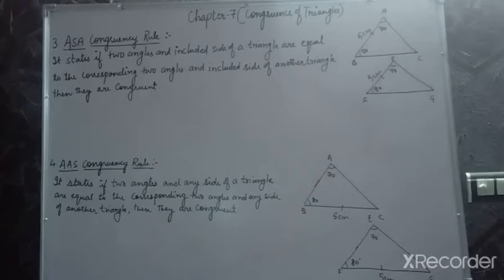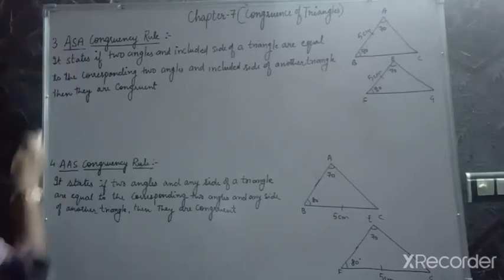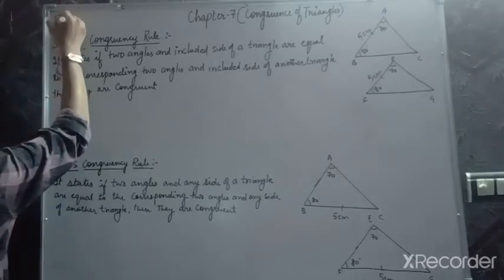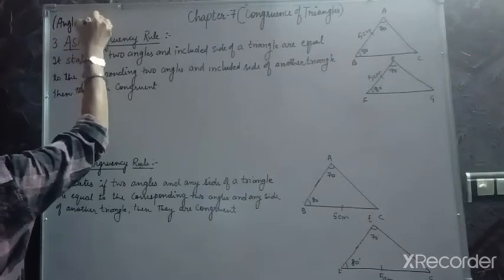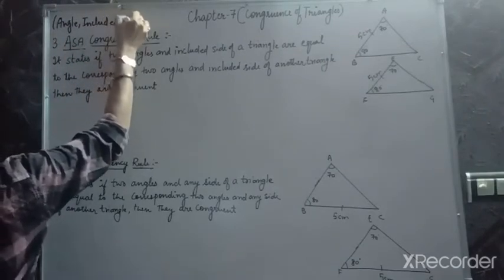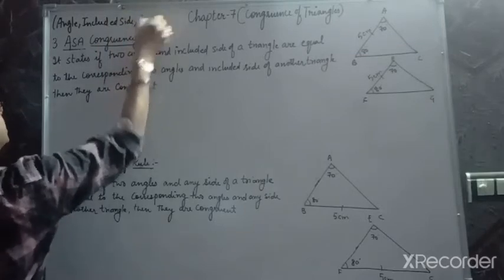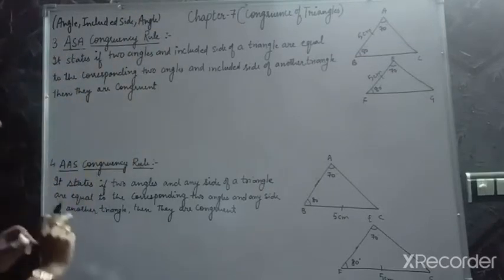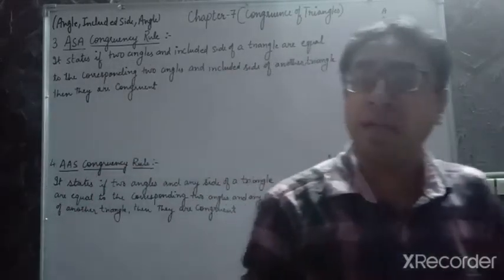Now we have to start with the next three criteria. The very first is ASA. ASA stands for angle, included side, angle. Why included side? Because this side is coming between two angles, therefore it will be called as included side.